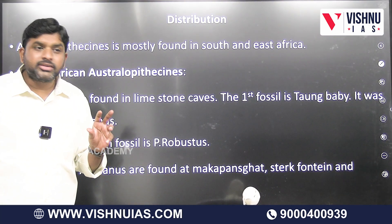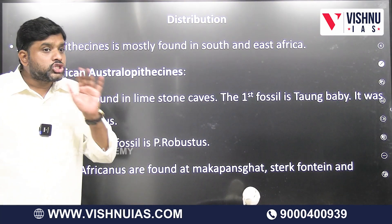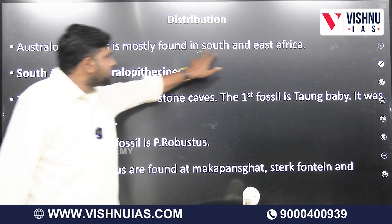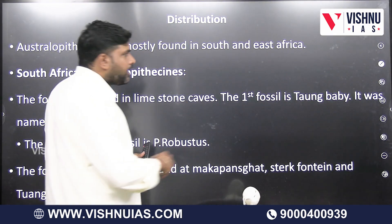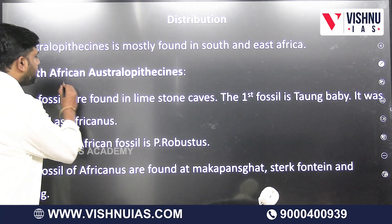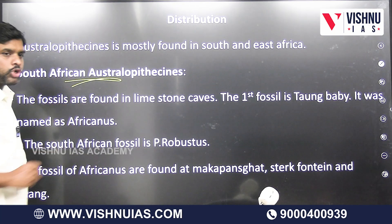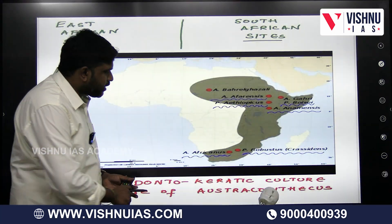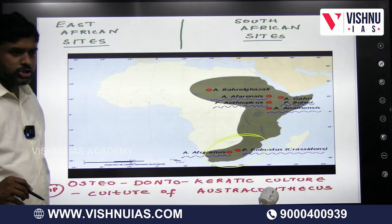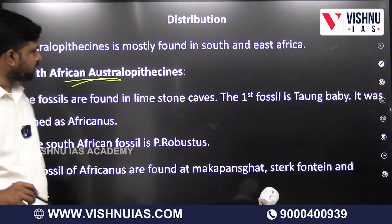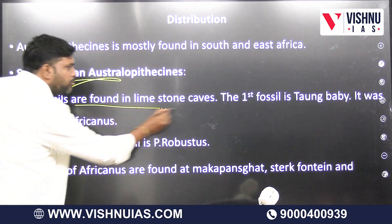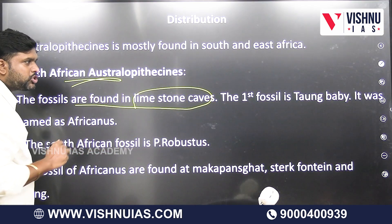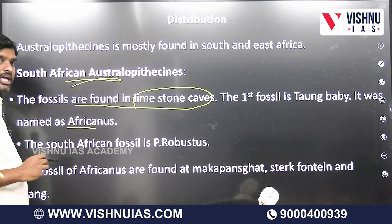Australopithecines are mainly present in the South African continent and East African continent. Discussing South African Australopithecines: the fossils are found in limestone caves. The first fossil, the Taung Baby, was named as Africanus.